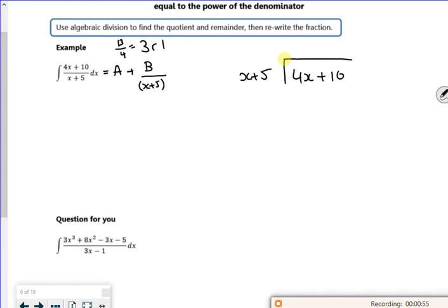So how many times does x go into 4x? That's 4 times. That's my a value. And then if I times that by 4, I've got 4x plus 20. So if I take it away, I get minus 10. There's nothing else to bring down. So that's my remainder, because it doesn't quite fill in.